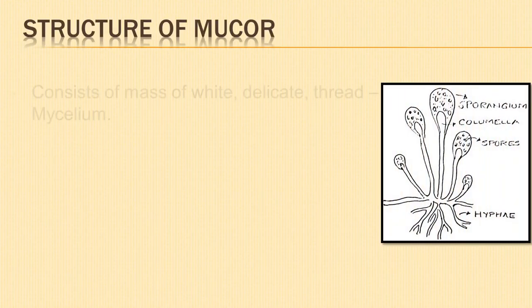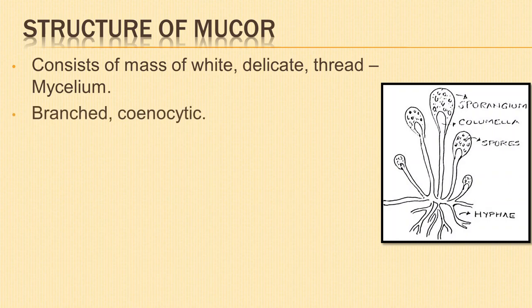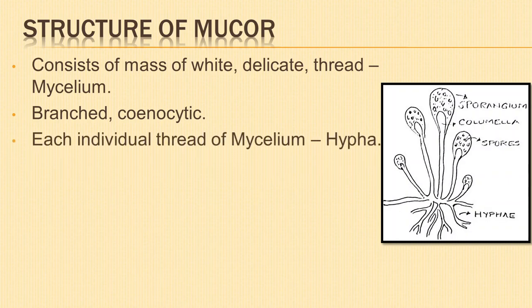The plant body consists of a mass of white, delicate threads collectively known as the mycelium. It is highly branched, coenocytic — that is, aseptate and multinucleate. Each individual thread of the mycelium is known as hypha.